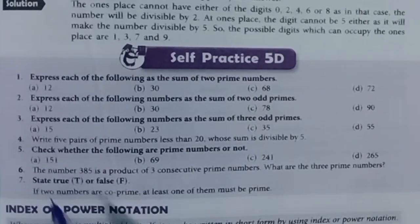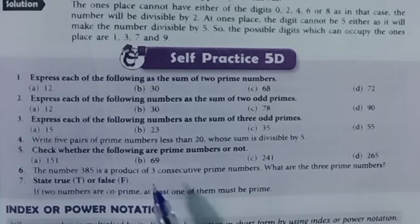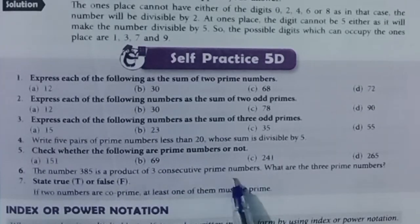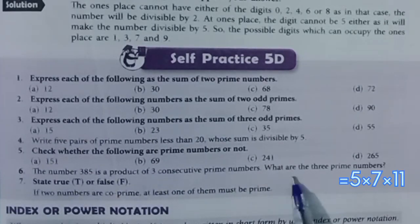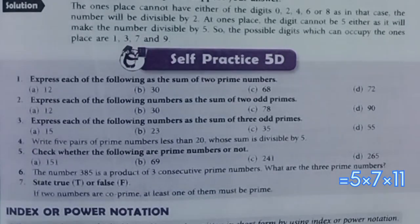Question 6: The number 385 is a product of three consecutive prime numbers. What are the three prime numbers? Answer: 5 times 7 times 11.